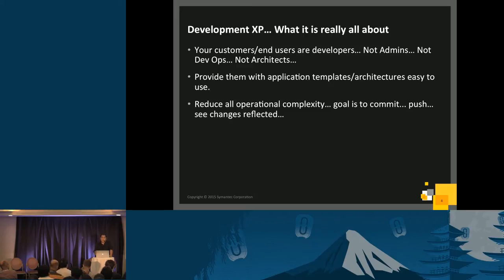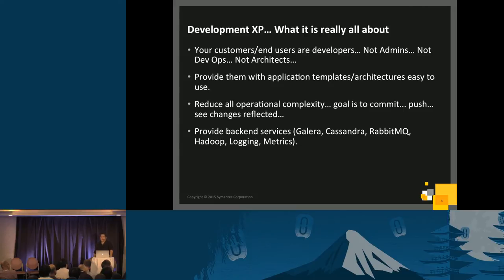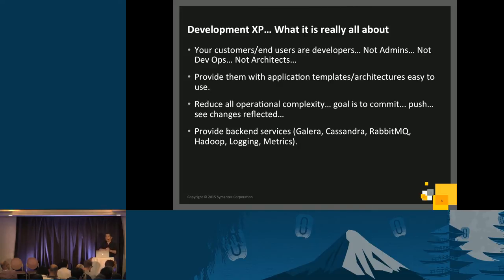But applications are only part of it — sometimes you need something more persistent. That's why we're providing backend services. Developers might require a RabbitMQ cluster, a message bus, Galera, or Cassandra. These are backend services for the developer's applications, not the backend of the PaaS itself. We have another layer of automation where developers can select 'give me a Galera cluster' and the automation brings it up, sets everything up, monitors it, self-heals it, and gives the developer the IP or URL to connect to.